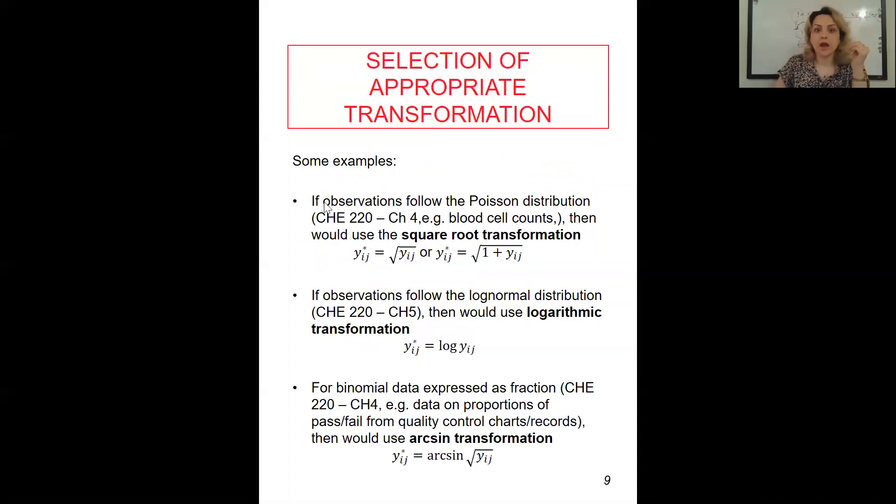For example, if observations follow the Poisson distribution, you can find more information about the Poisson distribution. For example, the blood cell counts that we would have. And then you would use the square root transformation. What does it mean? We would say y star that you see is the transformation after we had the transformation. For example, the square root transformation is going to be the square root of y. So here I have y equal to x beta plus epsilon.